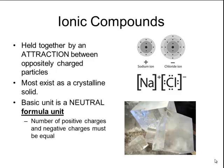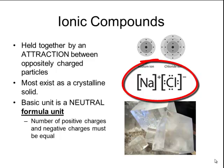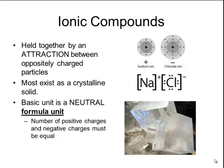In a molecular compound, the basic unit was called a molecule, but in an ionic compound, the basic unit is called a formula unit. This formula unit is neutral, because the number of positive charges and the number of negative charges must be equal to each other. For example, in sodium chloride, we have one sodium and one chlorine that are attracted to each other, because sodium has a plus 1 charge and chlorine has a negative 1 charge.